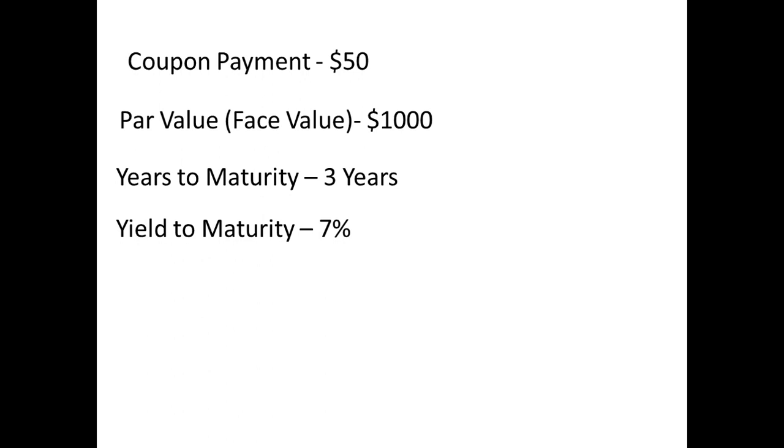We have our par value of $1,000, the yield to maturity of 7%, our coupon payment of $50, and then we have our periods until maturity, which is 3.